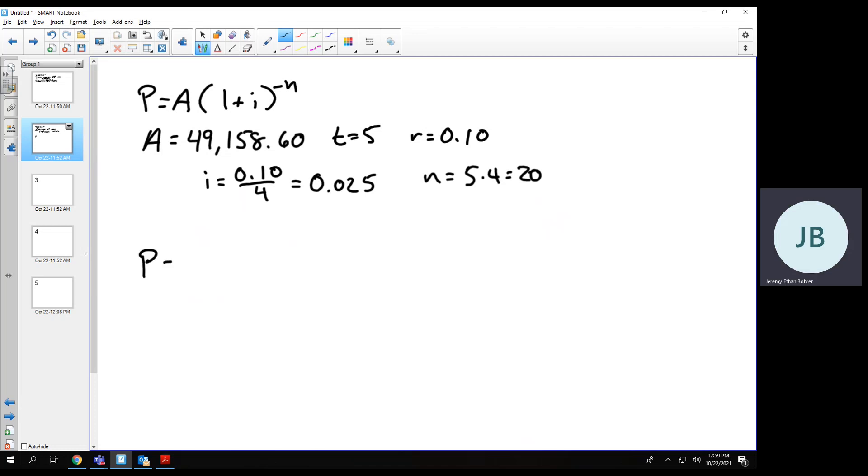Plugging everything in, we get P equals 49,158.60 times 1 plus 0.025 raised to the 20th power.